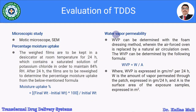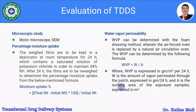Water vapor permeability can be determined with the foam dressing method, where an air-forced oven is replaced by a natural air circulation oven. Water vapor permeability is calculated using the formula: WVP = W / A, where WVP is expressed in grams per meter squared per 24 hours, W is the amount of vapor permeated through the patch in grams per 24 hours, and A is the surface area of the exposed sample in meter squared.